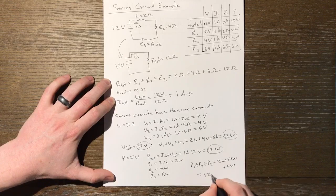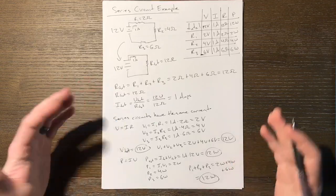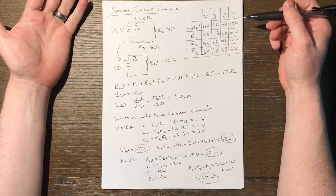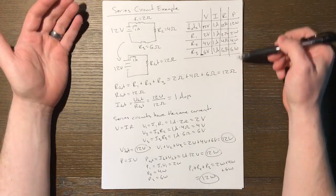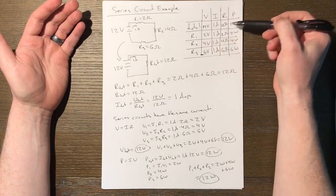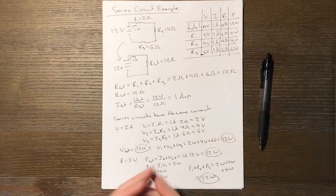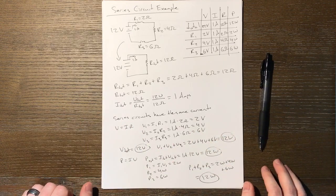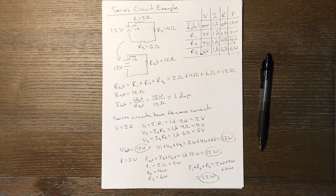And our circuit is completely consistent. And we could answer any question you could possibly ask about the voltages, the currents, the resistances, or the powers for the total circuit or any individual component on it. So that is a series circuit example. Next, we'll be looking at a circuit that is in parallel.